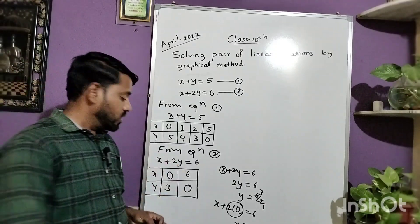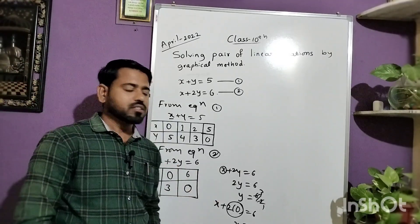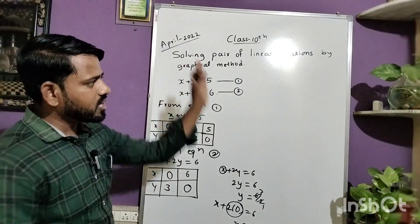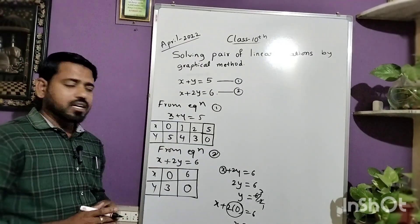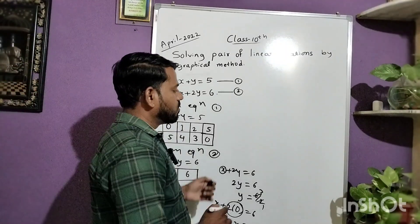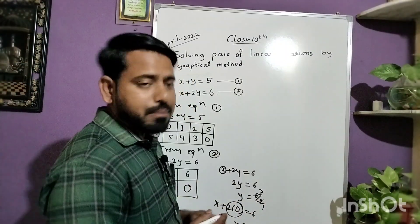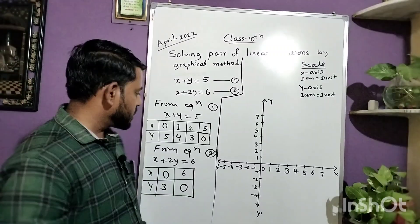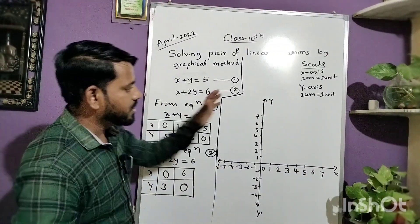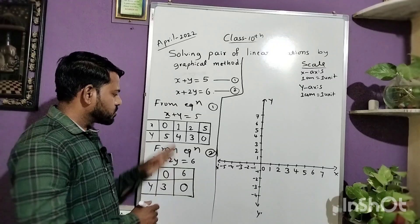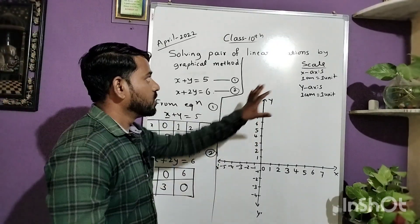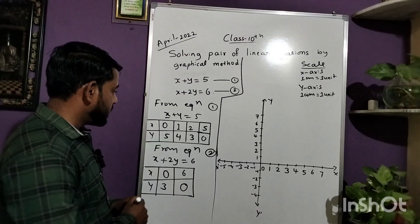With the help of these two tables, plot the graph for both equations. For this you will get two marks; the remaining two marks are for the remaining part. Now take these two tables and draw the graph. First mark these points in the coordinate system.